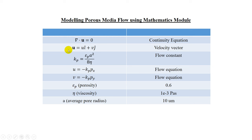We have taken one example — porous media flow. The flow field is given by the vector u in two dimensions, having x-directional component u and y-directional component v. The equations are: u equals minus kp times the pressure gradient along the x-direction, and v equals minus kp times the pressure gradient along the y-direction. Here kp is a constant given by epsilon_p times a squared divided by 8 eta, where epsilon_p is the porosity of the medium, a is the average pore radius, and eta is the viscosity of the liquid.